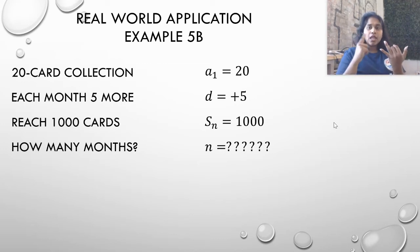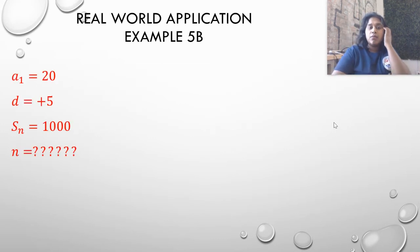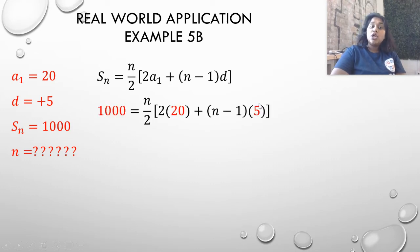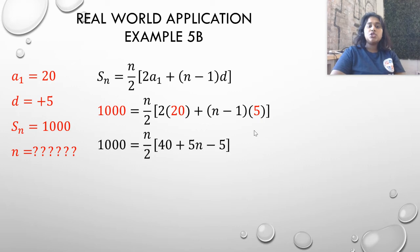Well, if I know the first term, I know the difference, I know what the sum equals, and I don't know the n, then I can use the first sum formula to help me solve this. So I go ahead and throw that first sum formula in. I plug in what I know. I know the end sum. I know the original term. And I know the second difference. I know what that plus five is doing each time. So I go ahead and solve it out as far as I can solve it.